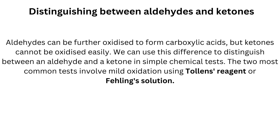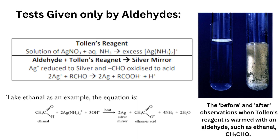To distinguish aldehydes from ketones: aldehydes can be further oxidized to form carboxylic acids, but ketones cannot be oxidized easily. The two most common tests involve mild oxidation using Tollens' reagent or Fehling's solution. For Tollens' reagent, the reagent is a solution of silver nitrate in aqueous ammonia, giving the [Ag(NH₃)₂]⁺ ion. An aldehyde reacts with Tollens' reagent to give a silver mirror: Ag⁺ is reduced to silver metal and the aldehyde is oxidized to an acid.